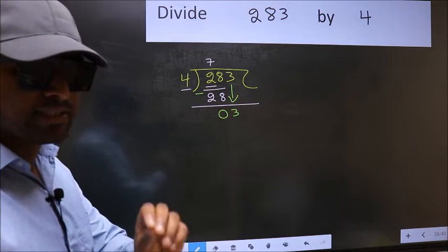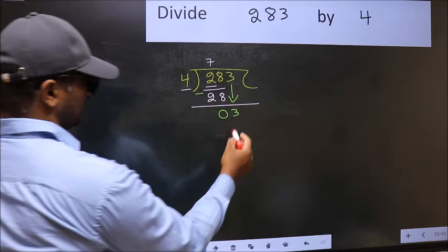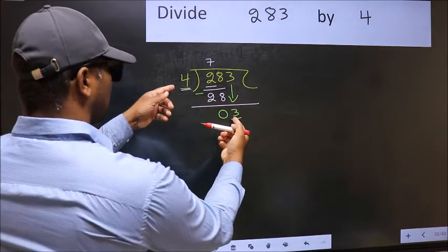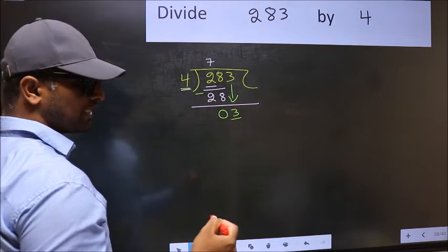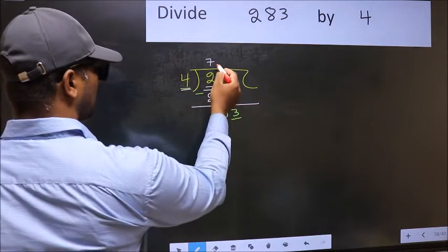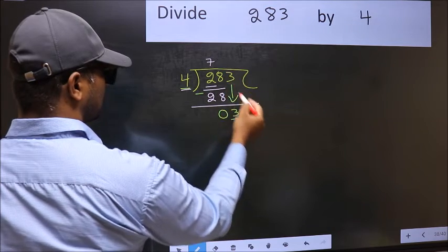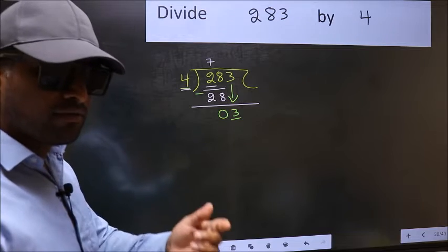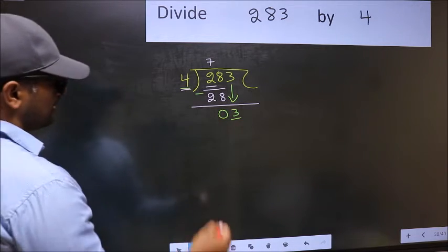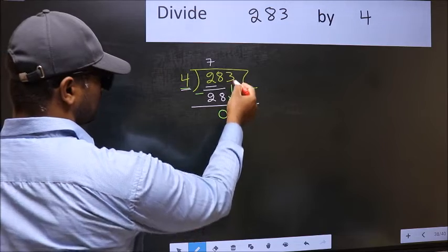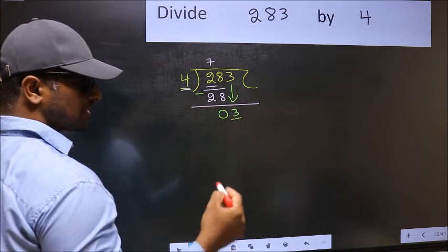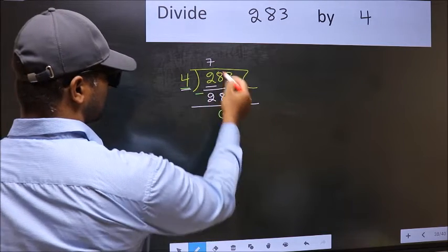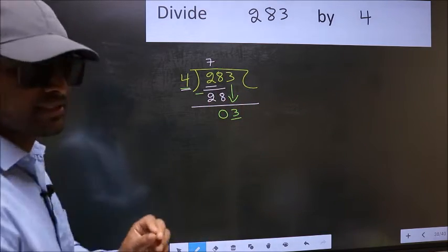And the mistake is this. Here we have 3 and here 4. 3 is smaller than 4, so what many do is they directly put a dot and take 0. Which is wrong. Why is it wrong? Because just now you brought this number down, and in the same step you want to put a dot and take 0.